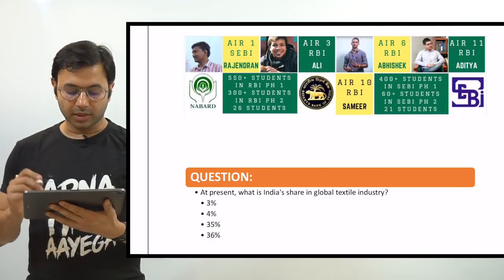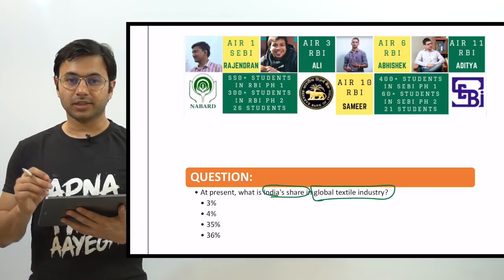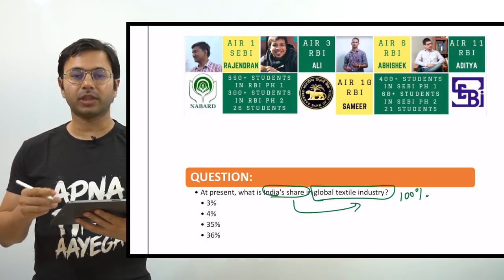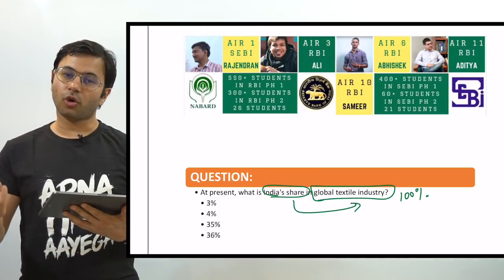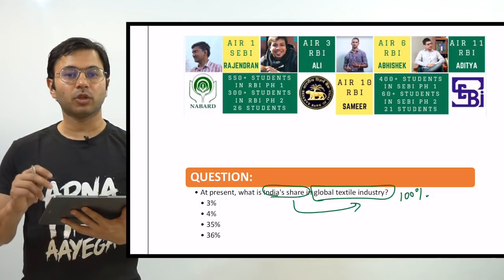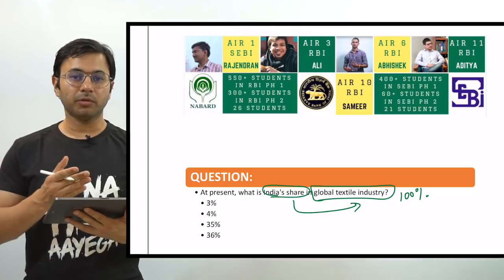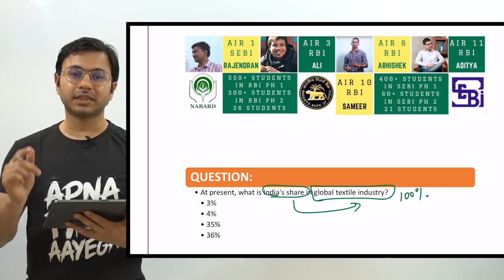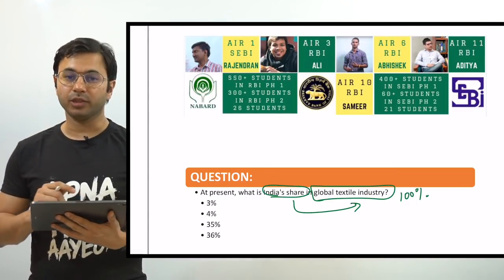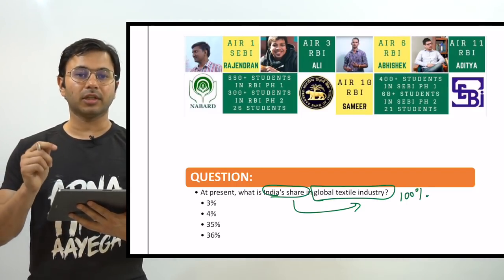The first question is: at present, what is India's share in the global textile industry? The question asks what percentage India contributes to manufacturing, exports, or overall production in the global textile industry. This is a purely factual question and such questions have been asked in examinations in the past. If you already know the answer, please type it in the comment section below.